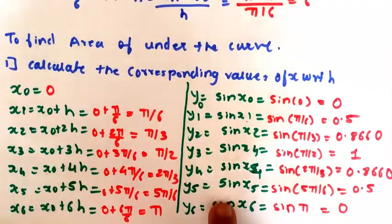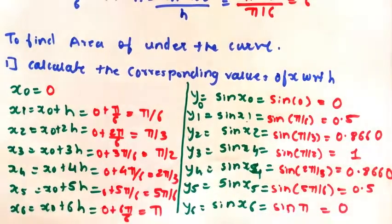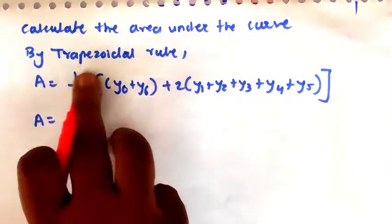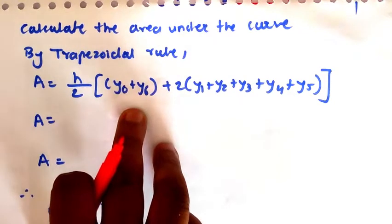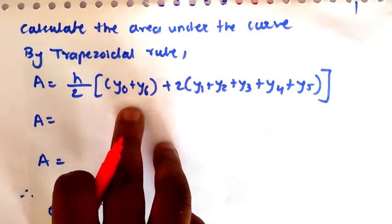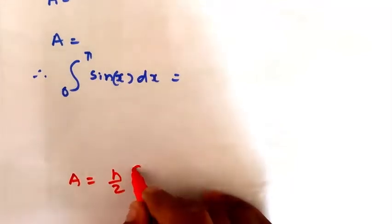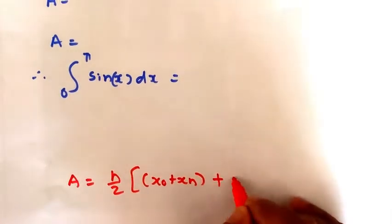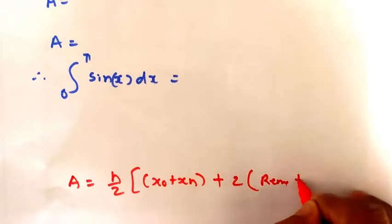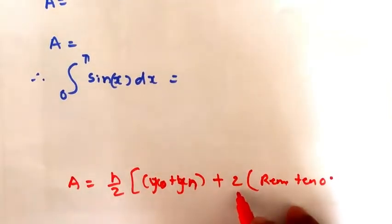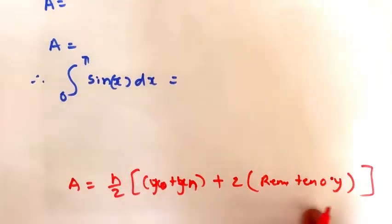And y6 = sin(π) = 0. These are the values of y with respect to x. The next step is to calculate the area under the curve using the trapezoidal rule. The trapezoidal rule formula is: A = (h/2) × [y0 + yn + 2 × (remaining values of y)].